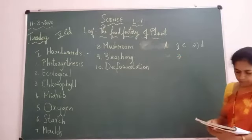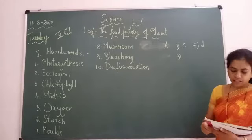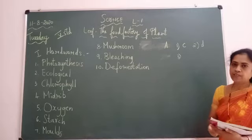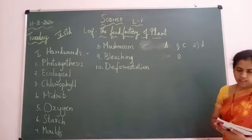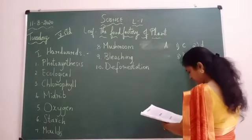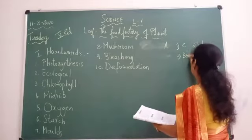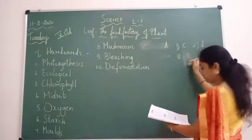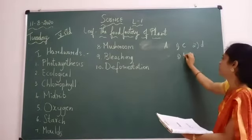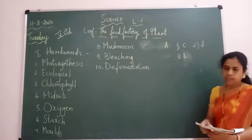Third question: Which of the following plants reproduces by leaves? Options are Mint, Bryophyllum, Cabbage, or Cauliflower. The answer is Bryophyllum — option B is the correct answer. It is there in the lesson in the textbook. You just need to tick the answer in your textbook.